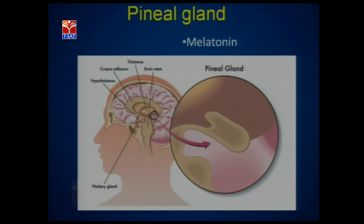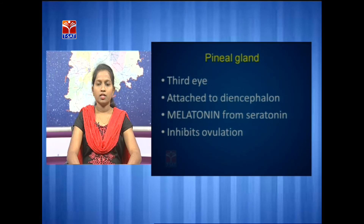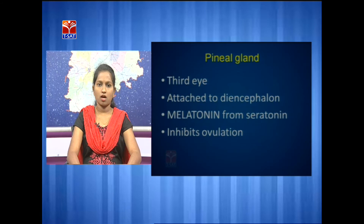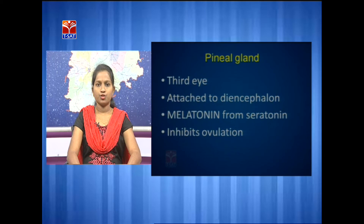The pineal gland secretes a hormone called melatonin. This gland was earlier called the third eye. It is attached to the diencephalon by a stalk called the pineal stalk. Melatonin is derived from serotonin and is generally released during night times. It inhibits ovulation and also maintains sleep-wake cycles.